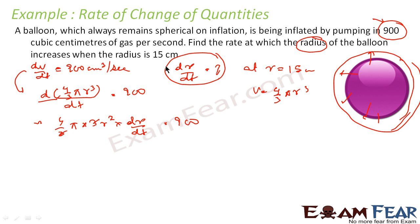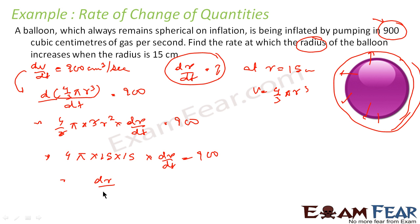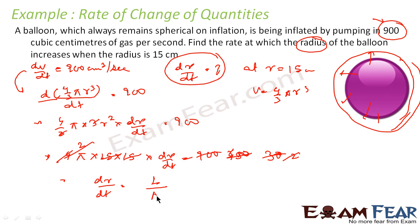Solving: 4π × 225 × (dr/dt) = 900, so dr/dt = 900 / (4π × 225) = 1/π centimeters per second. The unit is centimeters per second because we are talking about radius in centimeters and time in seconds.